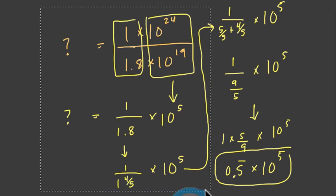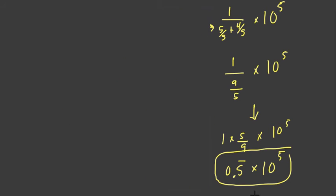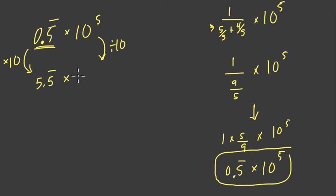So what do we do with this? 0.5 repeating - there's 5's forever and so forth after this point right here. So to write it in scientific notation we need to get this number here between 1 and 10. It's at about a half, right? So we multiply it by 10. And when we do that we get 5.5 repeating. There's always more 5's there. To maintain equivalence we divide this by 10 and we get 10 to the 4th. And that's our answer.